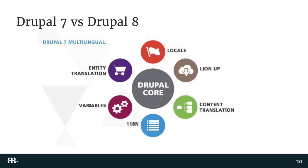I'm going to talk a bit about Drupal 7 versus Drupal 8 and the differences, especially when it comes to translation and localization. In Drupal 7, localization and multilingual was kind of an afterthought. When it was originally created there were some hooks into it, but to make the site truly multilingual you had to add all these other modules — entity translation, variables, i18n, etc. Drupal 7 is still a good multilingual choice and the community has been really supportive around that, so if you're still on Drupal 7, don't fret.